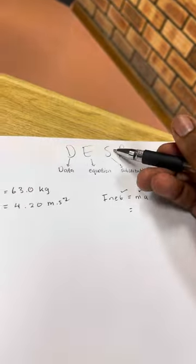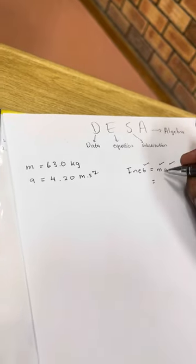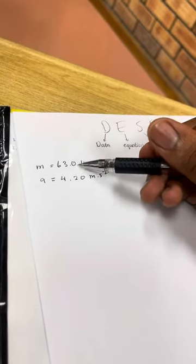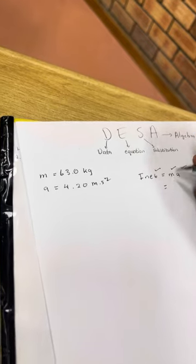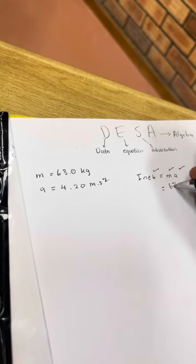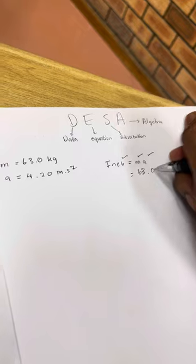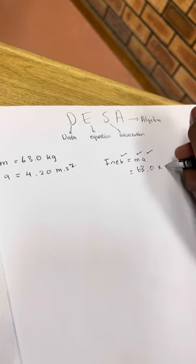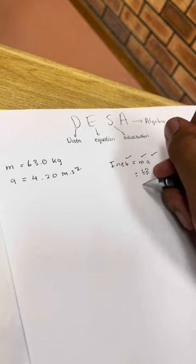So you now substitute the variables that you got. F_net equals m times a, so it's going to be 63.0 times 4.20.